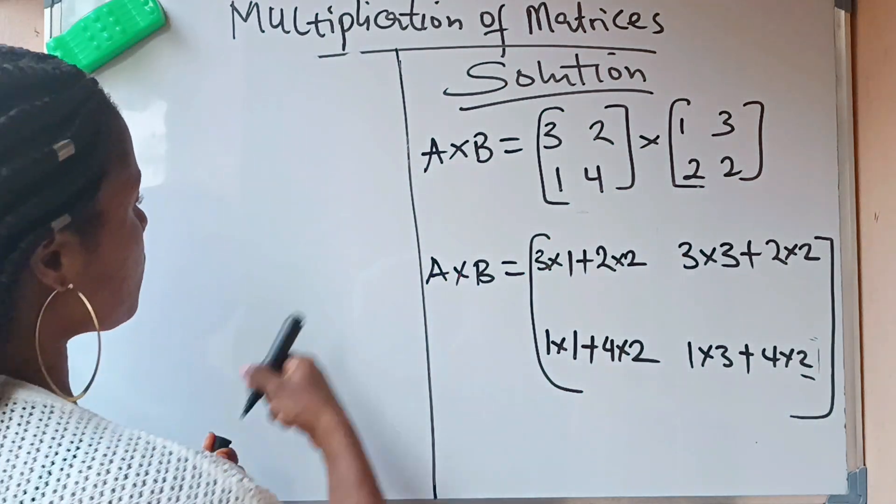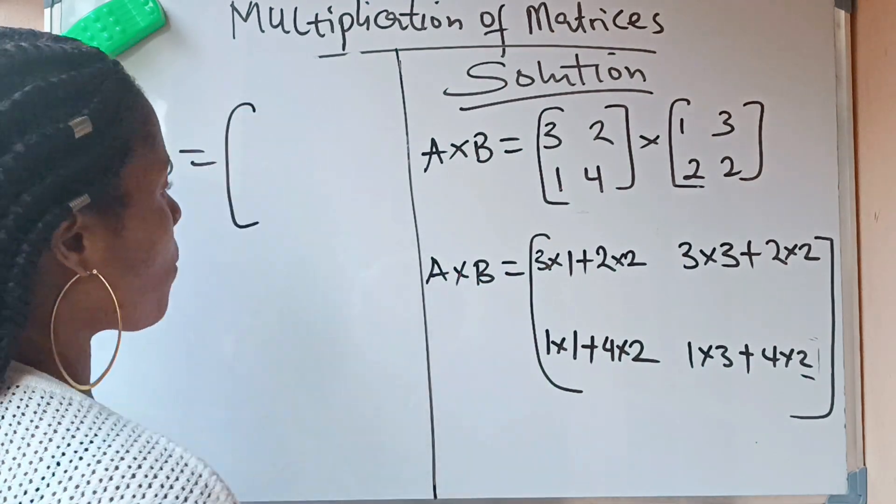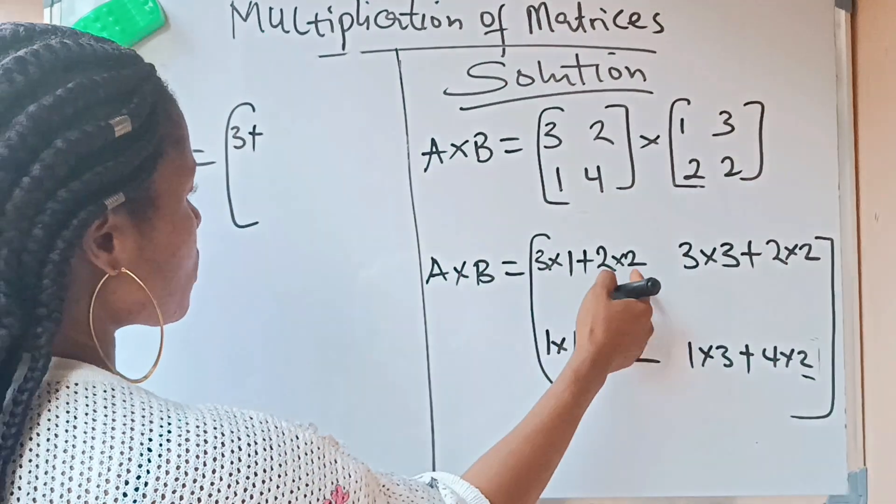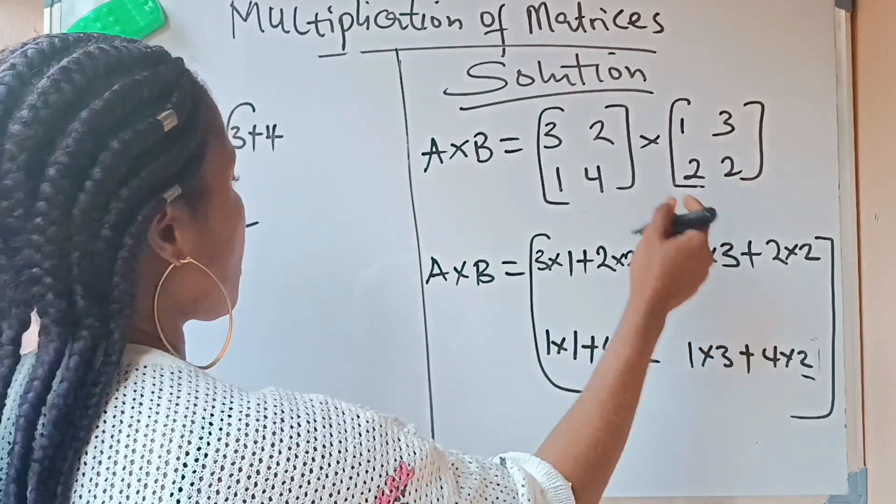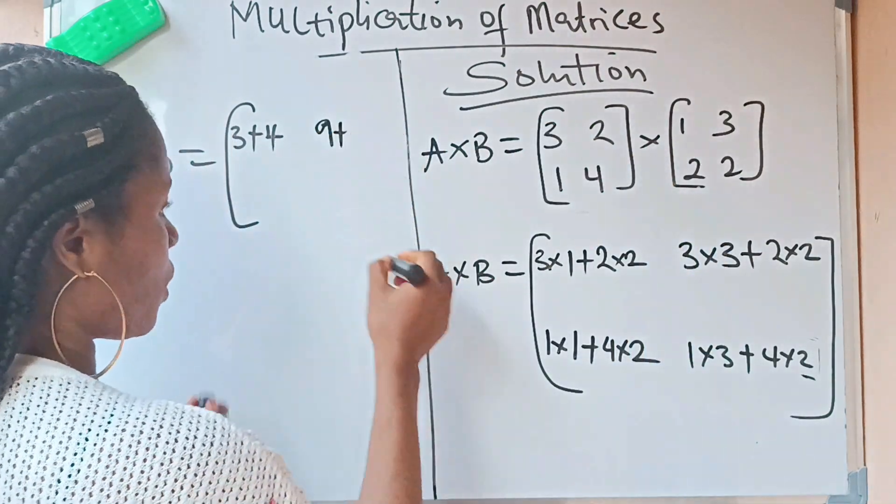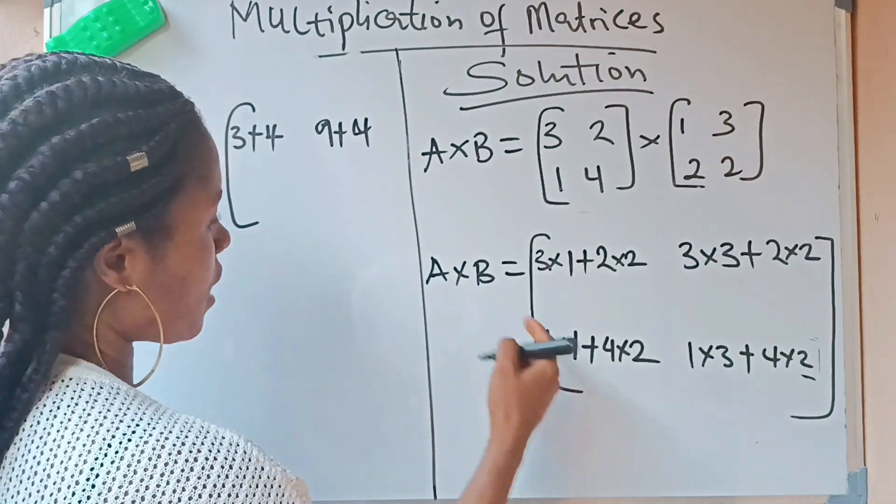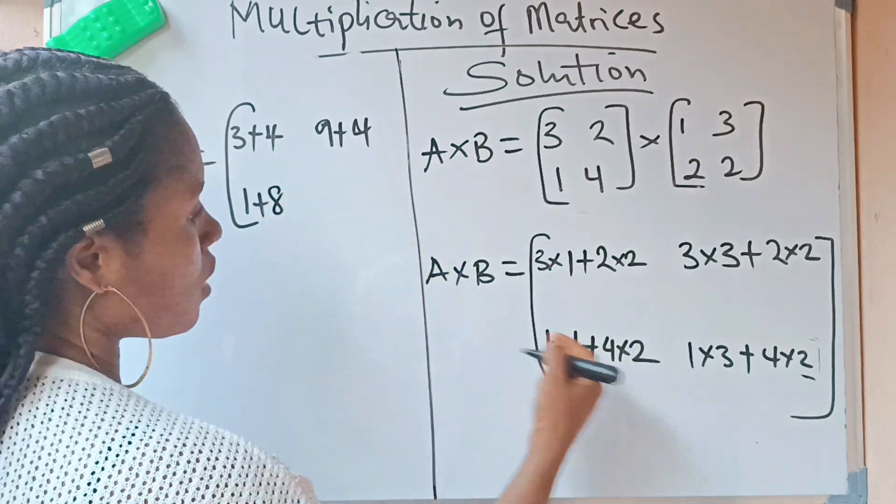So it means that A times B is equal to, we open our bracket: 3×1 is 3, plus 2×2 is 4. Now we have 3×3 is 9, plus 2×2 is 4. 1×1 is 1, plus 4×2 is 8.